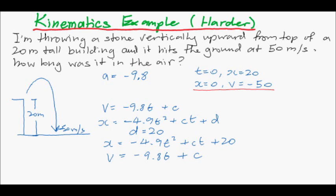We know that d equals 20. So, we can rewrite x. x is negative 4.9t squared plus ct plus 20. And we know, too, that v is negative 9.8t plus c. Now we've only got one more fact left, which is this one. x equals 0 at v equals negative 50. How do we use that? Well, I suppose what we can do is say, at some point in time, this condition is true.